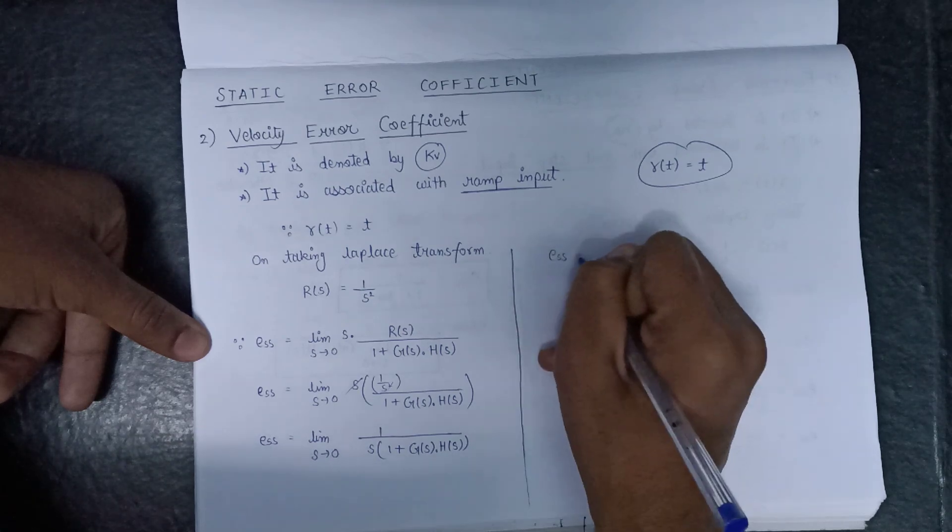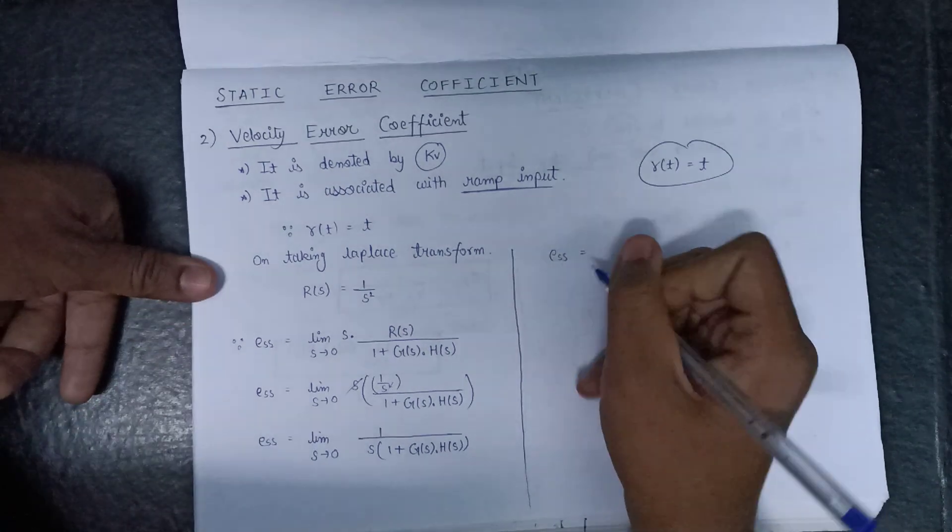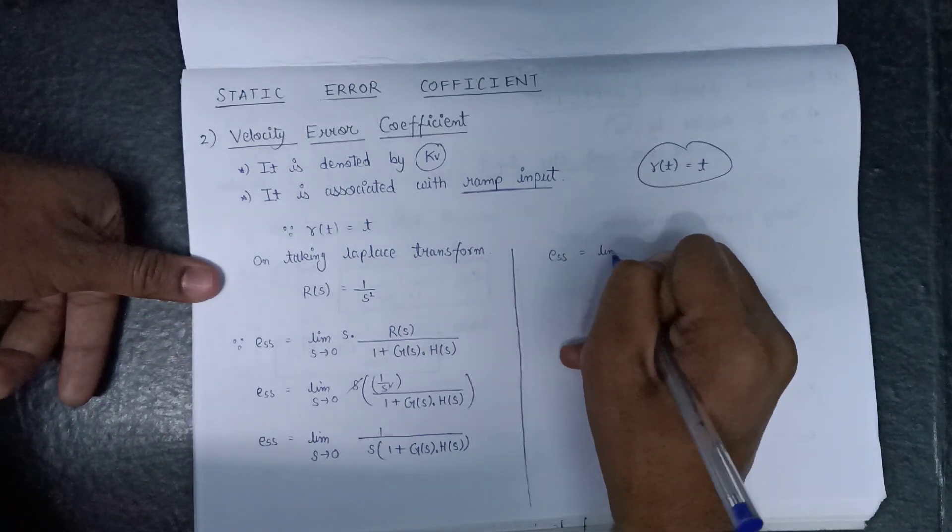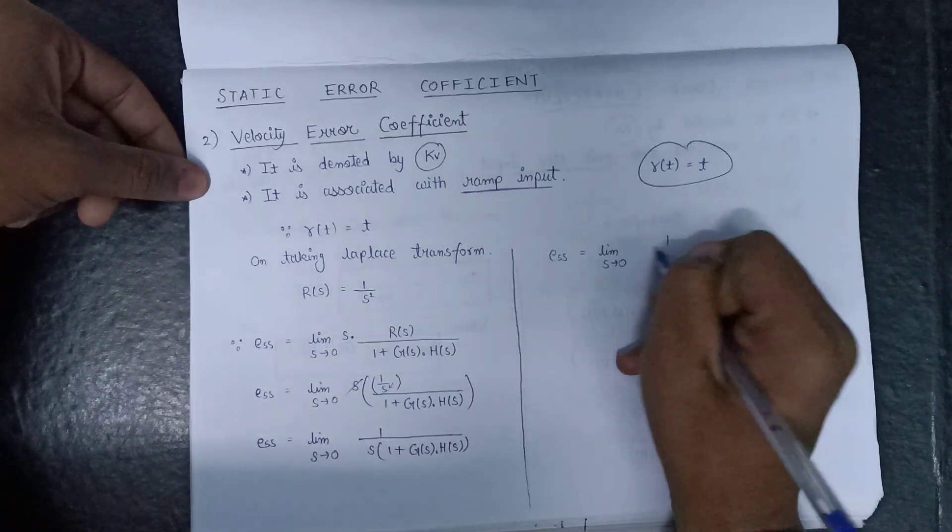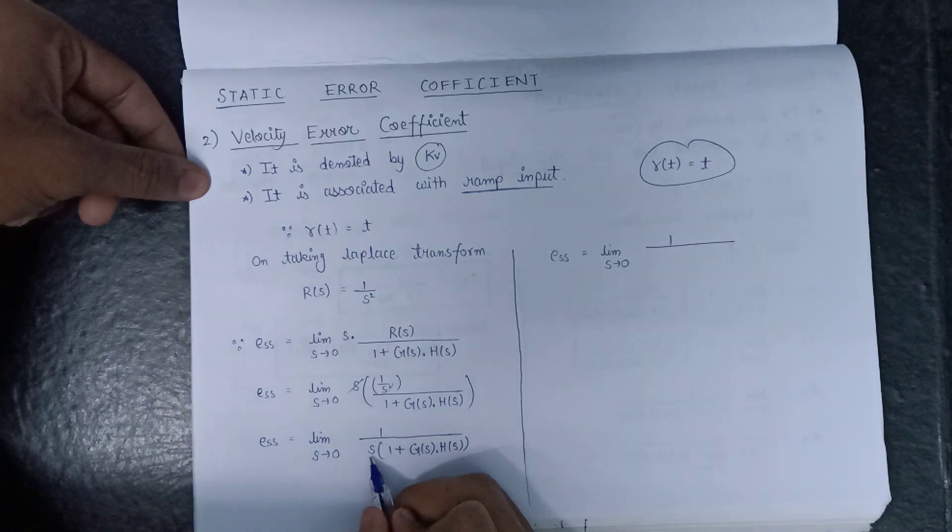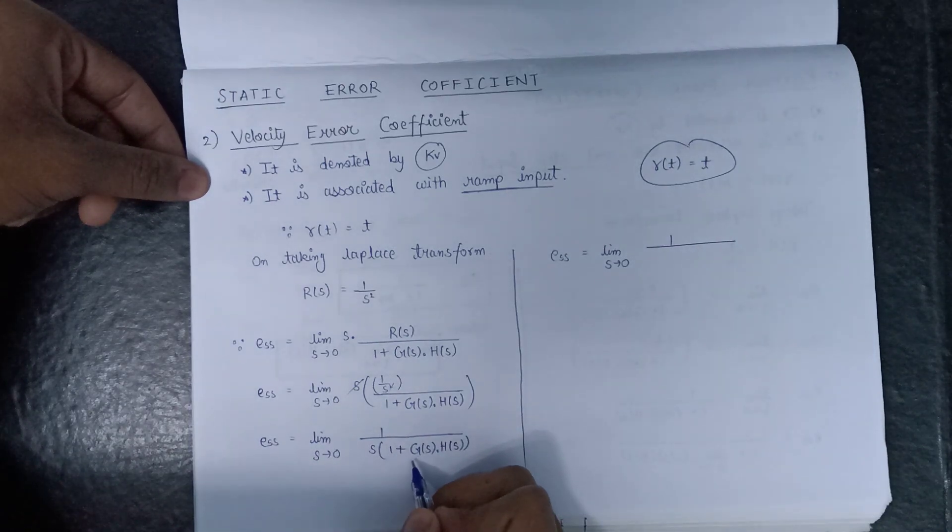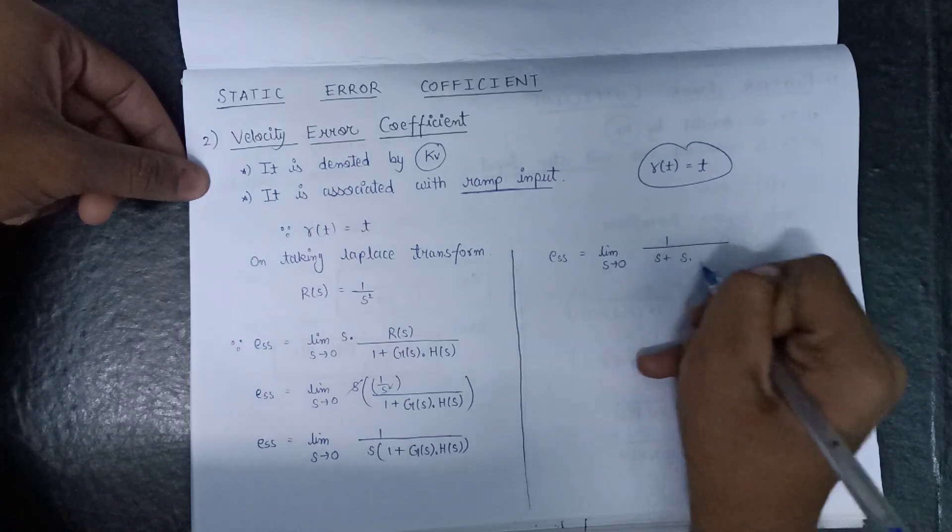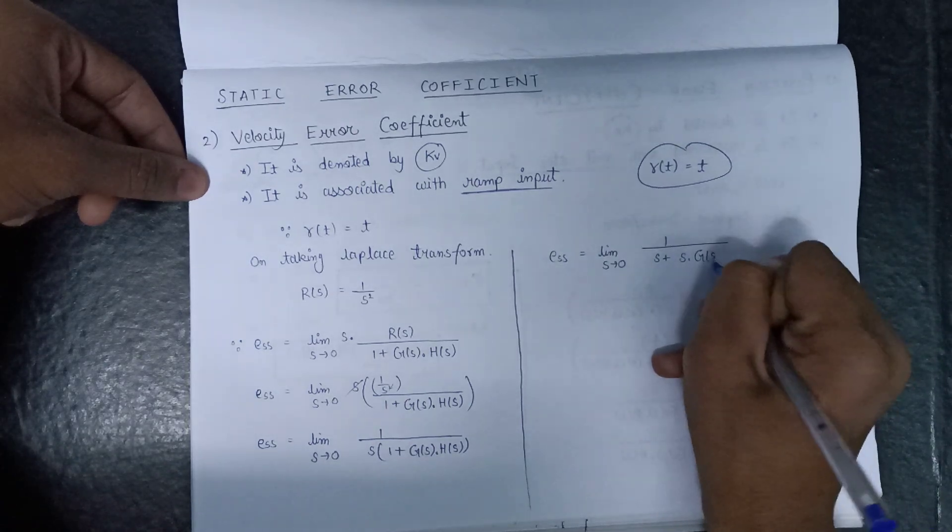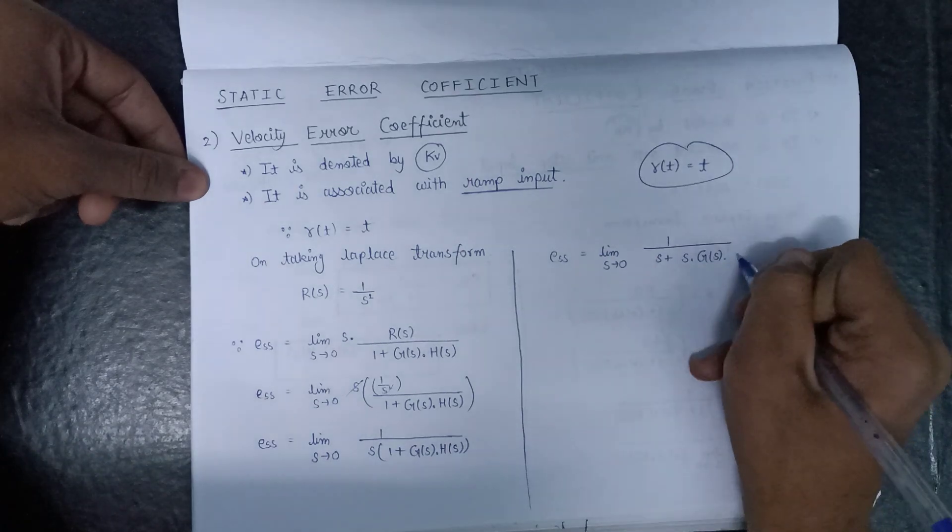E(s) will be equal to limit s tends to 0, 1 by multiplying this s inside the bracket, we get s plus s into G(s) into H(s).